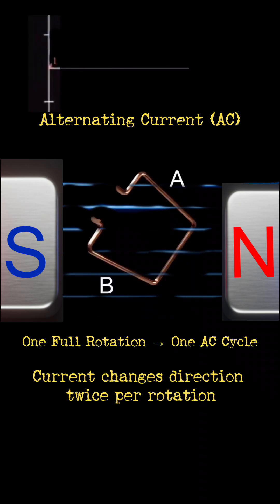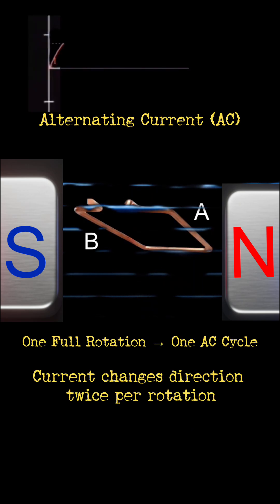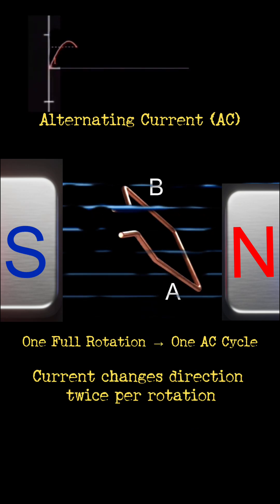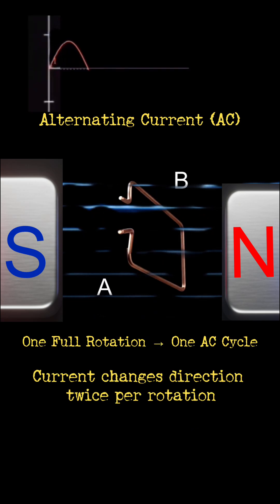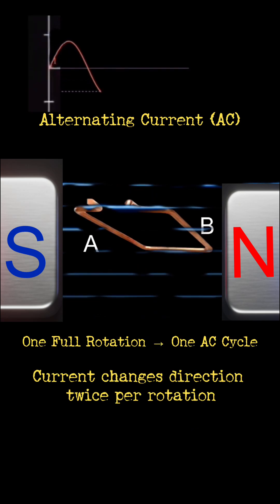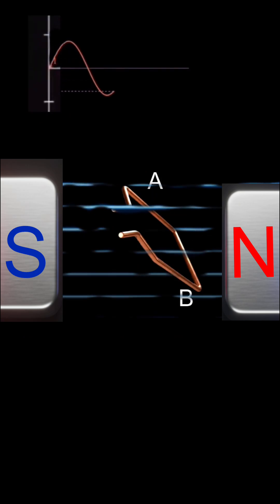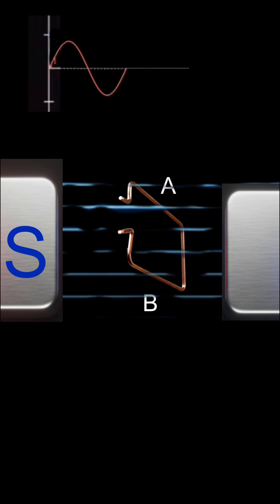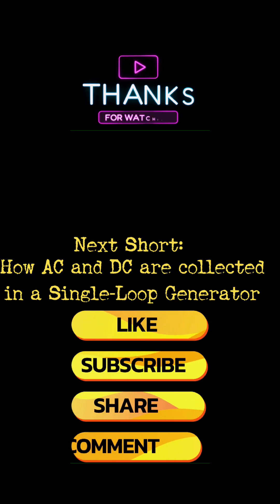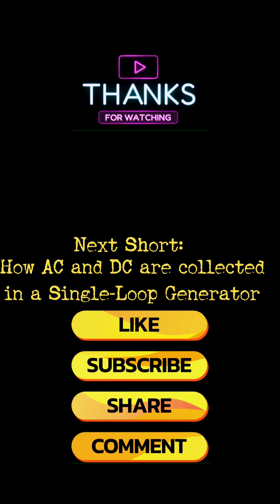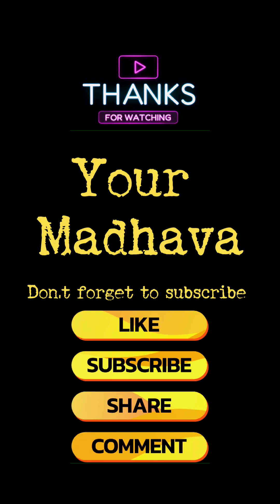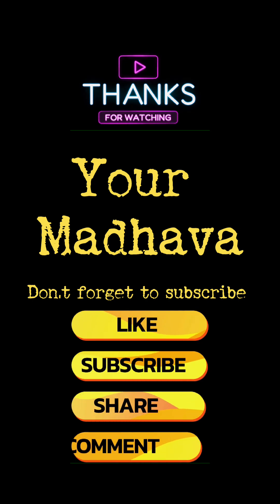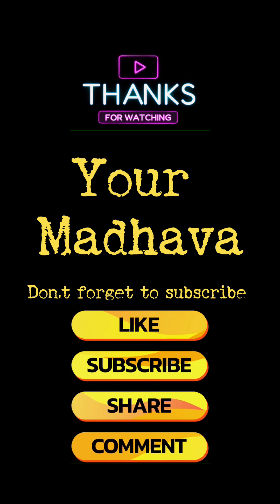In one full rotation of the coil, the current changes direction twice, forming one complete sine wave — the alternating current. In the next shot, we will see how this alternating current and direct current are collected in a single-loop generator.